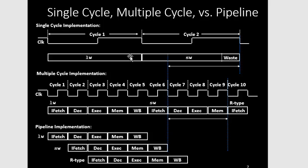In pipelining, we have concurrency. In single cycle and multi-cycle, everything happens sequentially. Multi-cycle is a bit more efficient than single cycle, but it's still sequential. In pipelining, in every clock cycle after the first, there is always more than one instruction being executed, which increases the throughput compared to single-cycle and multi-cycle.